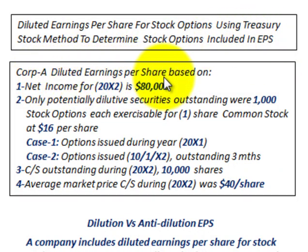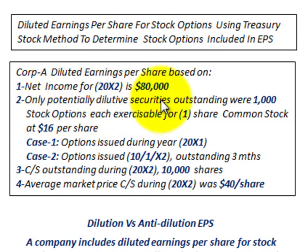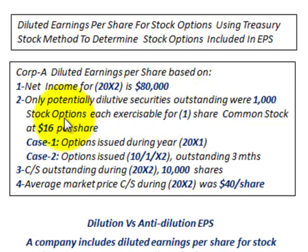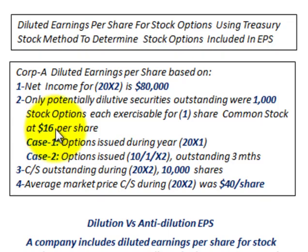Corporation A's diluted earnings per share is based on these facts: net income for the year 20X2 is $80,000, and the only potentially dilutive security outstanding were 1,000 stock options, each exercisable for one share of common stock at an option price of $16 per share. So the holder could buy one share of common stock for $16.